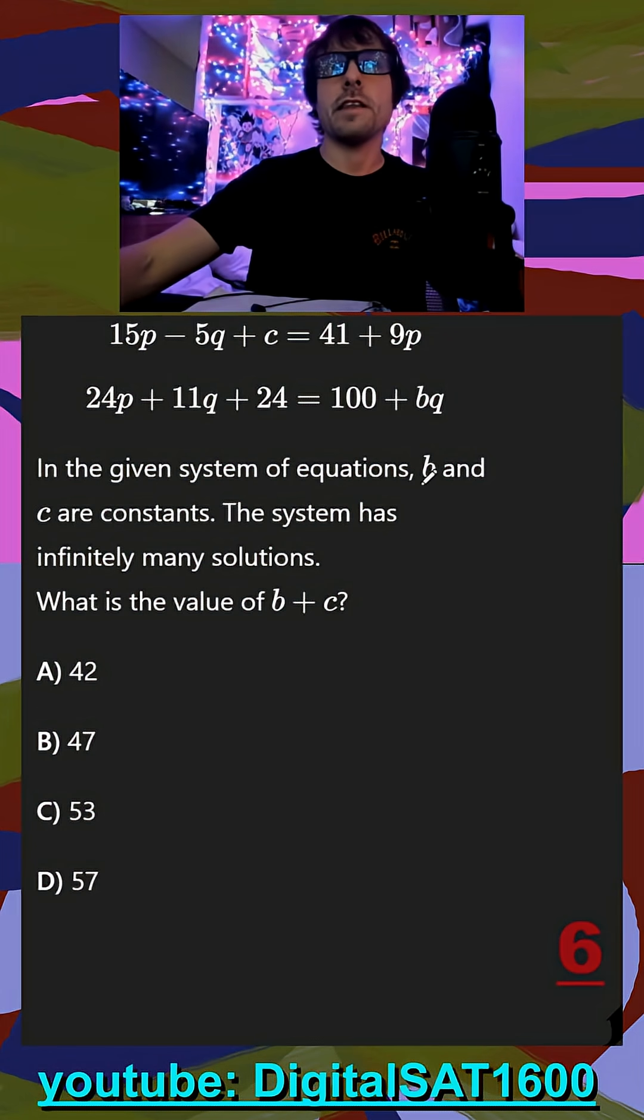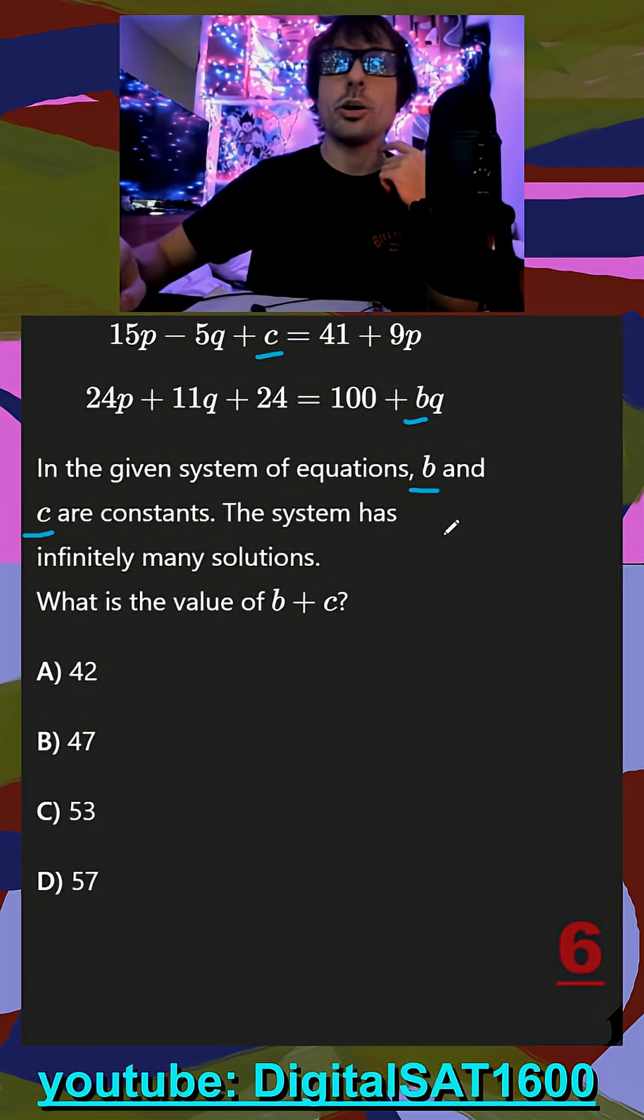I see a system of equations where b and c are constants. Here's our c, here's our b. They say the system has infinitely many solutions, which we already know what type of problem this is.